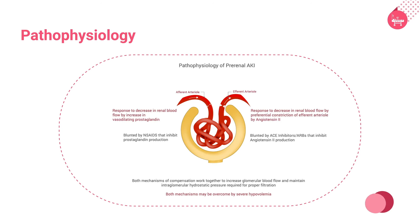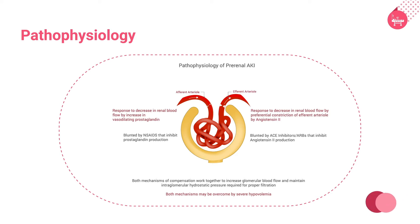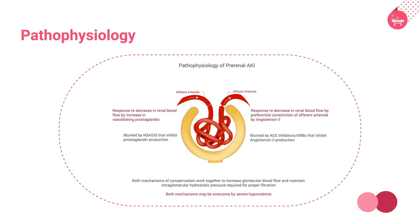When glomerular perfusion is threatened, autoregulatory mechanisms help maintain glomerular capillary pressure. If autoregulatory mechanisms are inoperative, a given reduction in renal blood flow provokes a sharper decline in GFR. Reduced renal perfusion slows the flow of filtrate through the renal tubules, enhancing reabsorption of urea. Because creatinine is not reabsorbed in the renal tubules, its clearance is unaffected by these factors. Thus, clearance of urea is reduced disproportionately to that of creatinine, explaining the unusually high BUN-to-creatinine ratio often seen in prerenal states — typically exceeding 20 to 1.